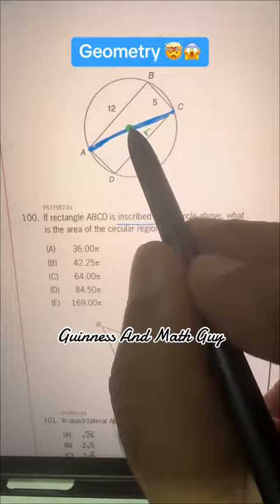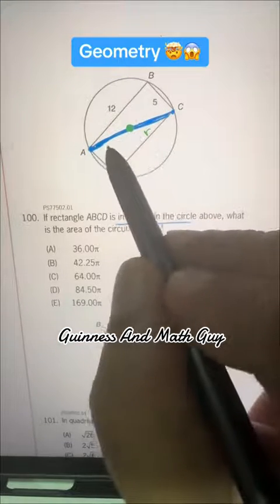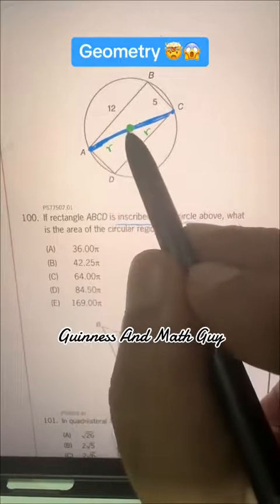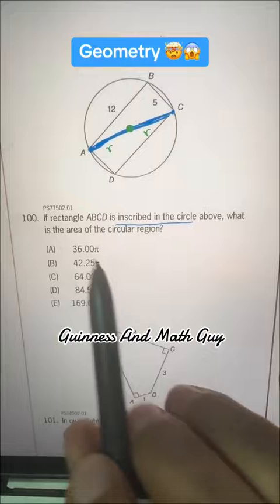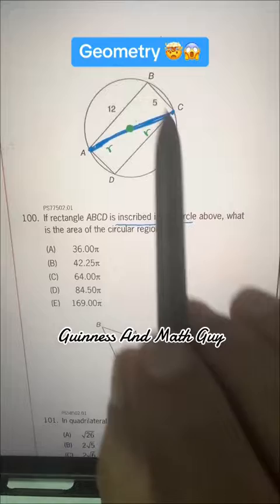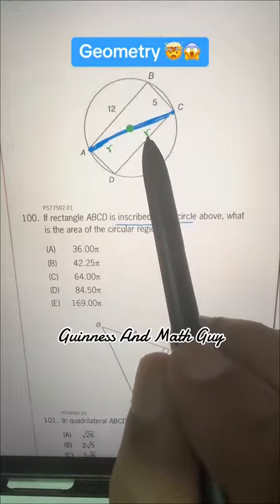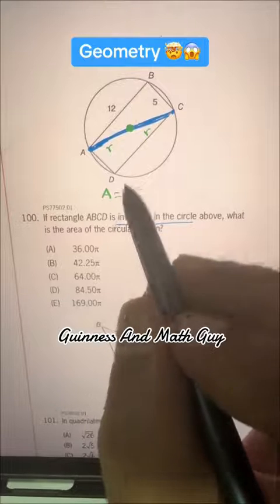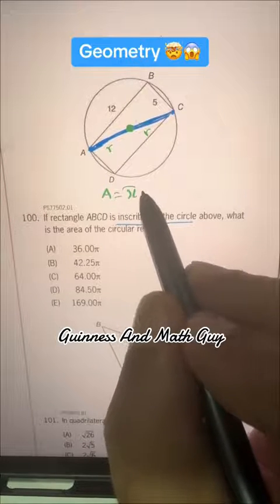This is radius from the center to C, and this is also radius from the center to A. We need the area of the circular region. For area, we need radius, and the area of the circle is πR².